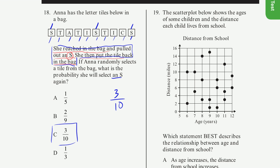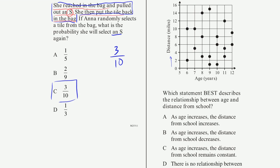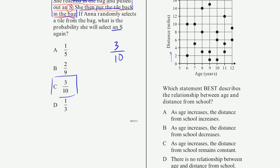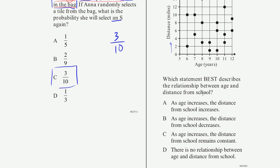Problem 19. The scatter plot below shows the ages of some children and the distance each lives from school. So this is the ages, and then this is the distance in that axis. Which statement best describes the relation between age and distance from the school?